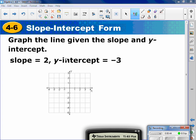Here I'm given the slope and I'm given the y-intercept. We're going to start with the y-intercept. What does a y-intercept mean? It's where the line crosses the y-axis. So it crosses the y-axis at negative 3. So I go down 3, put a dot.